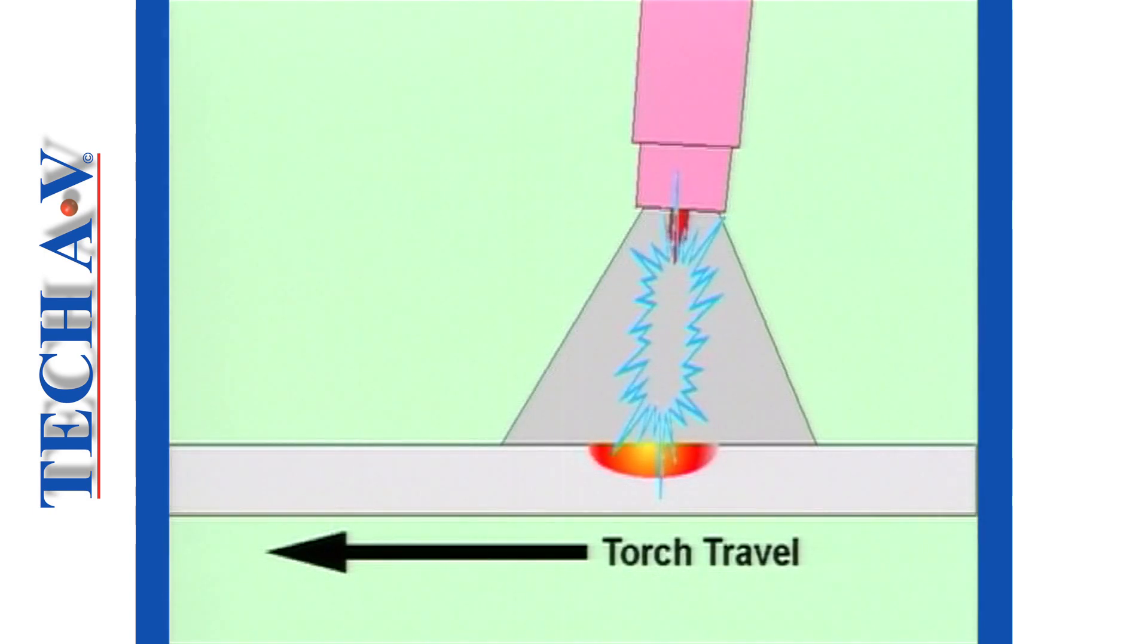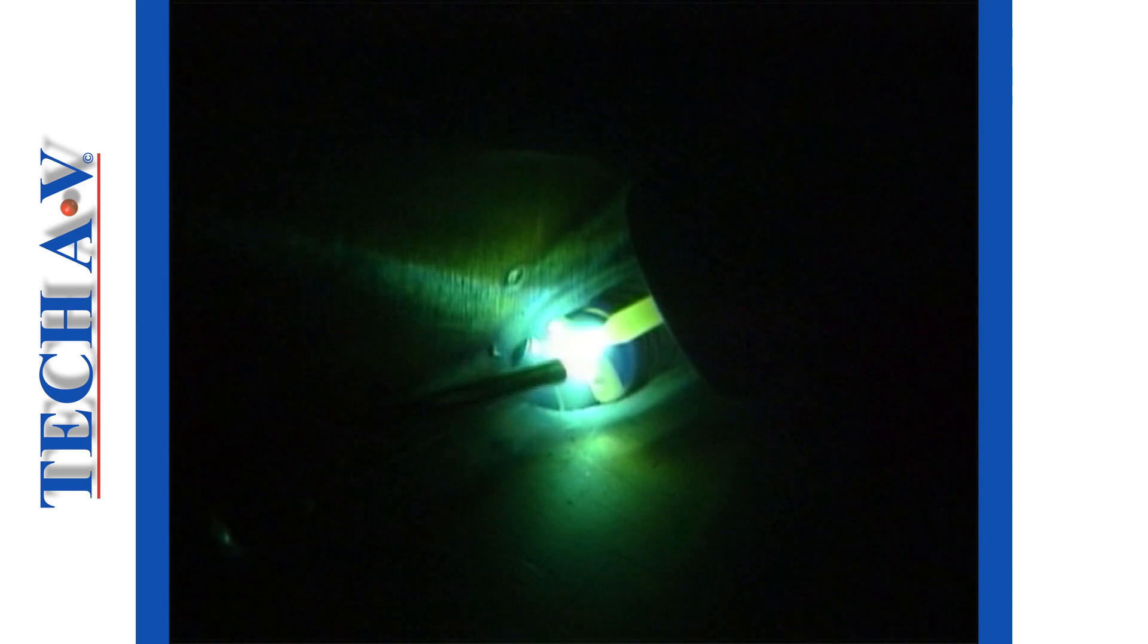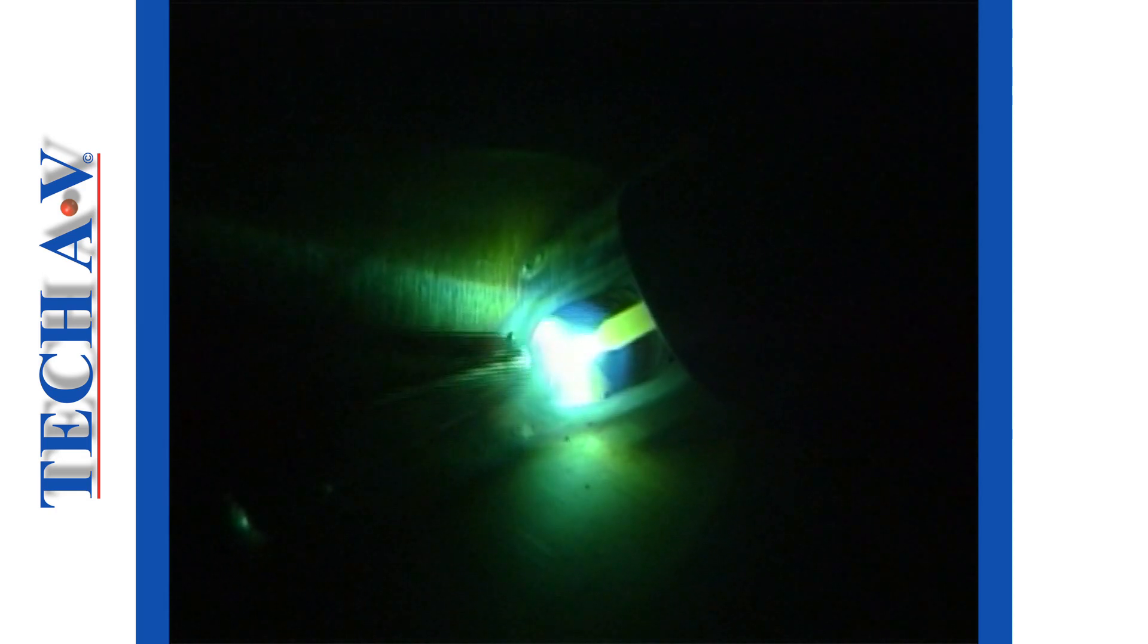On some metals, a layer of oxide will develop in the area ahead of the weld pool. This oxide layer, if not removed, will prevent the weld pool from flowing smoothly along the joint to be welded.